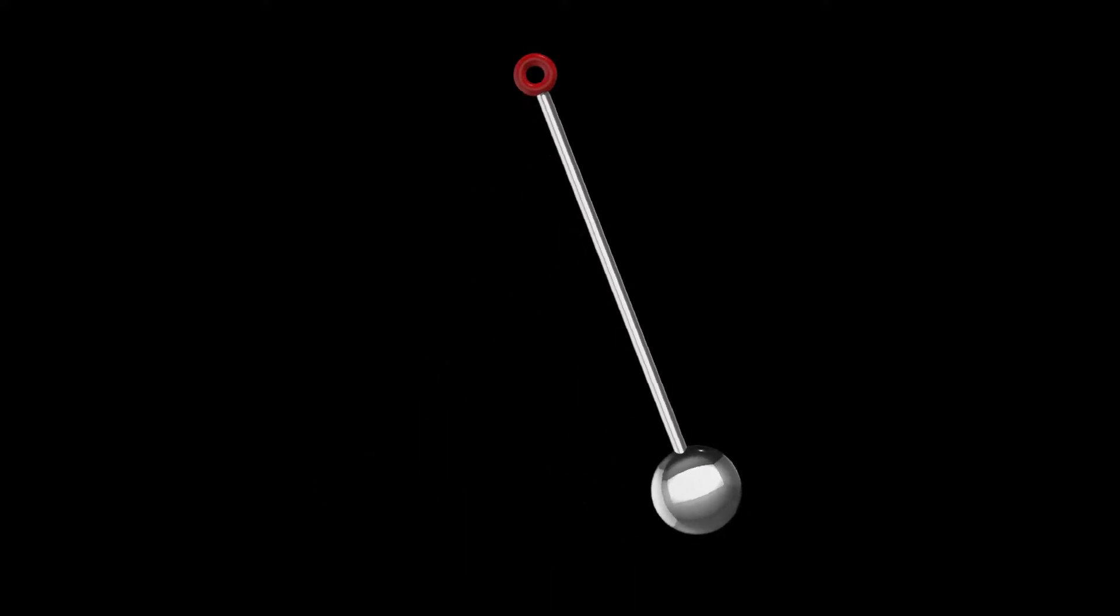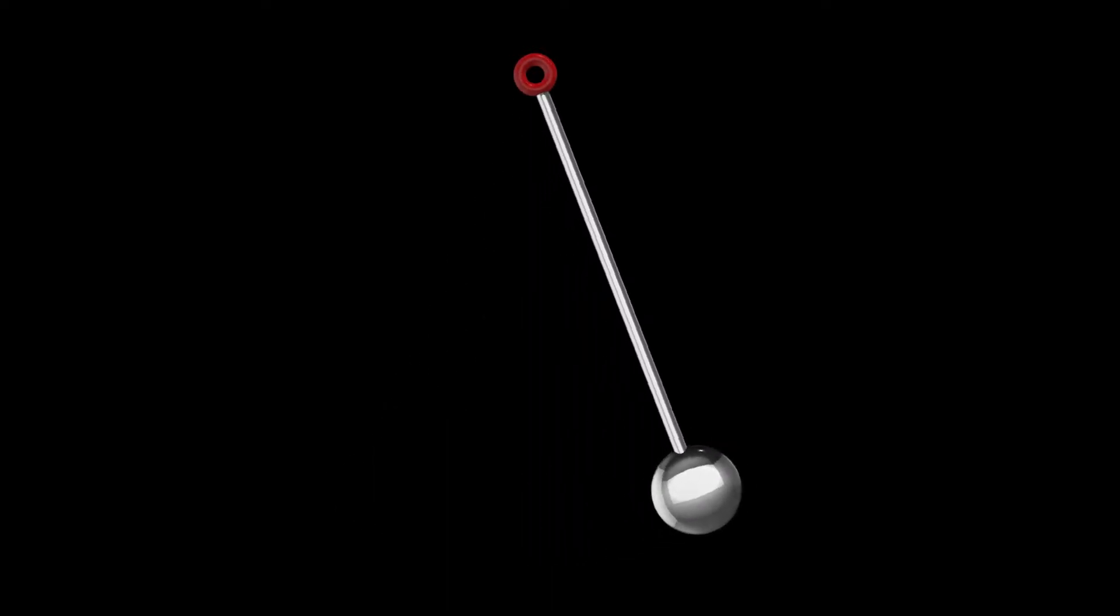Pendulums are used to make a periodic motion continuously in wall clocks. This motion regulates the time of the clock.